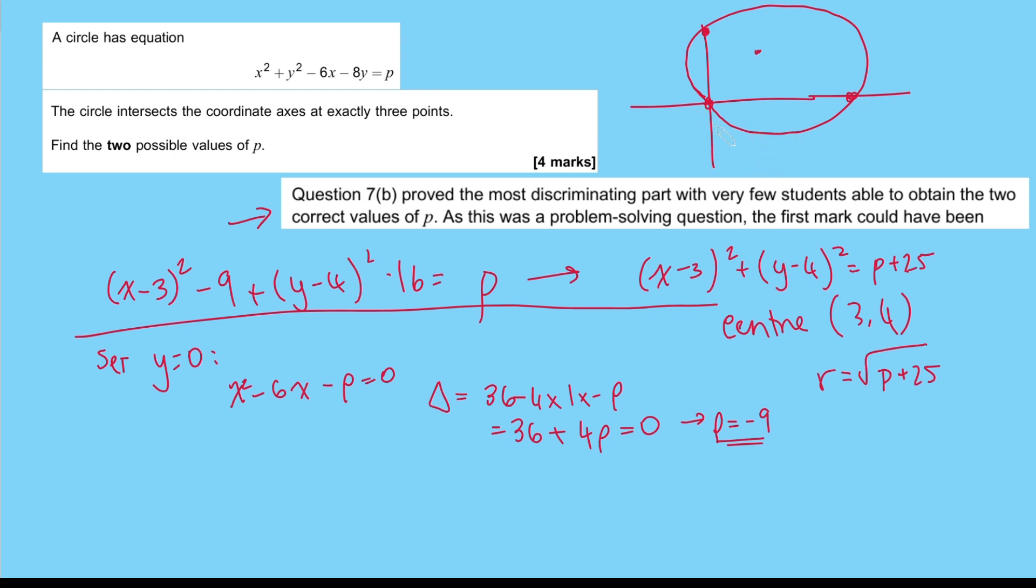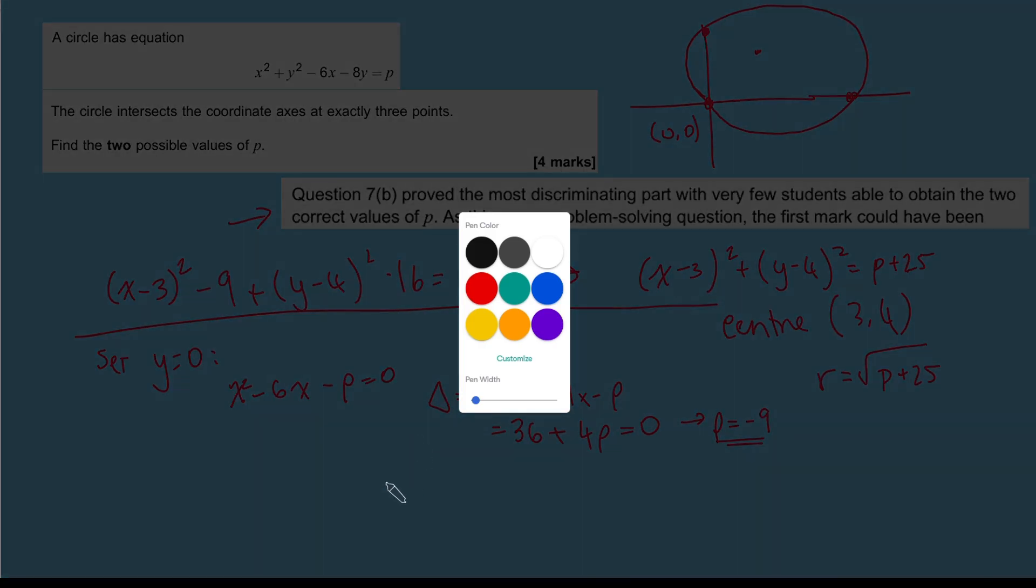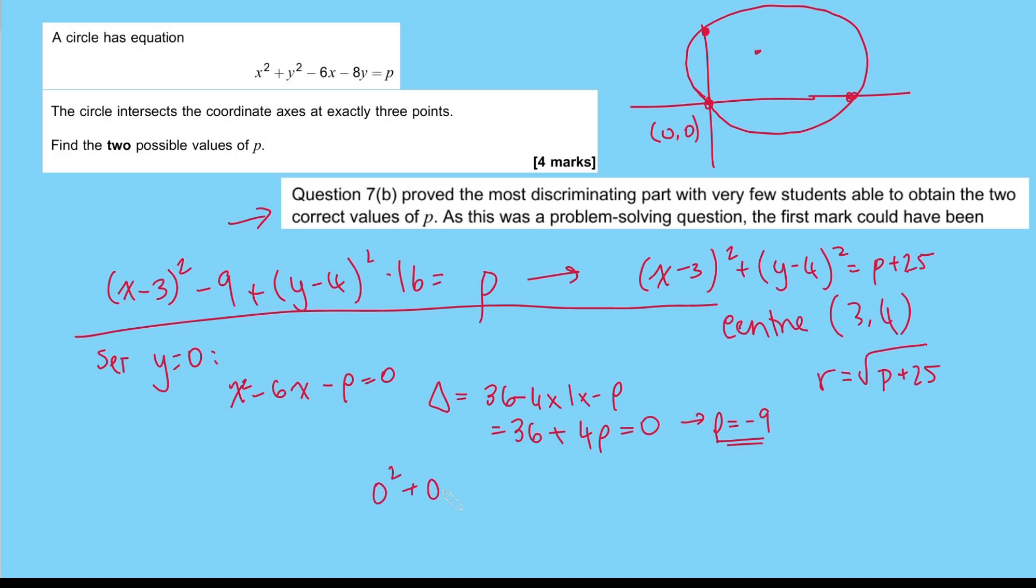And that's crucial to this problem. So the other possibility here to have exactly three points of intersection is if it passes through the origin, which of course is (0,0). And if we sub that in here, we get 0² + 0² - 0 - 0 = p. So in other words, p = 0.